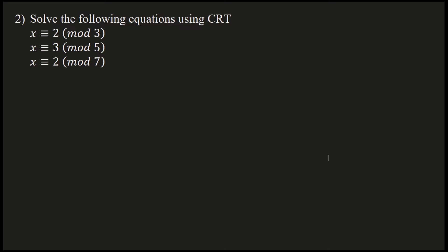Welcome to today's lecture. In today's lecture, I am going to solve one more example on Chinese Remainder Theorem. The example is: solve the following equations using CRT, that is Chinese Remainder Theorem. The equations are x congruent to 2 mod 3, x congruent to 3 mod 5, and x congruent to 2 mod 7.